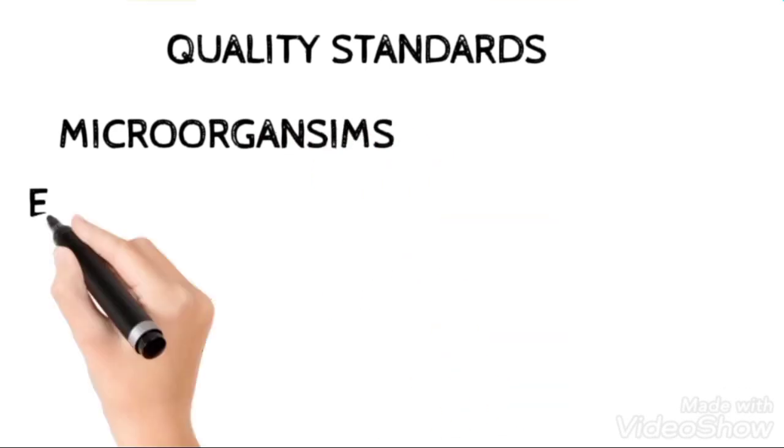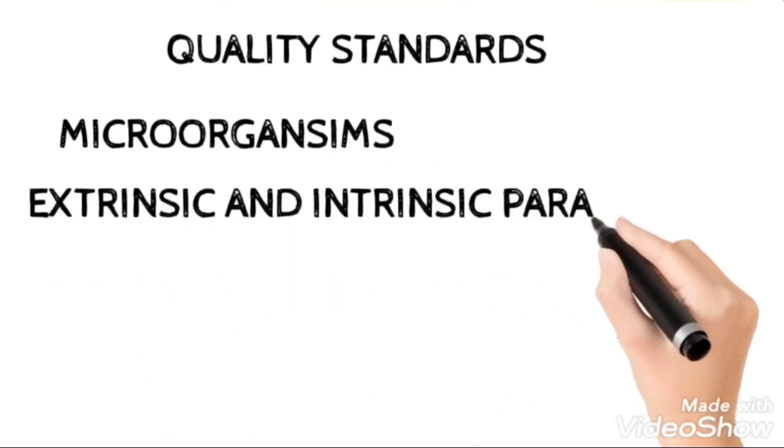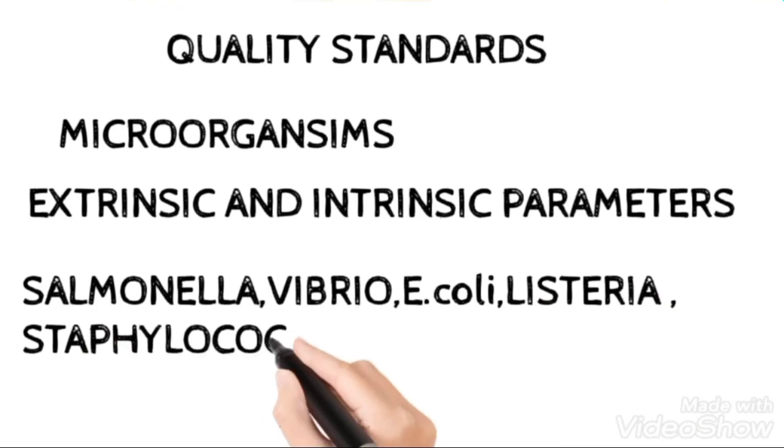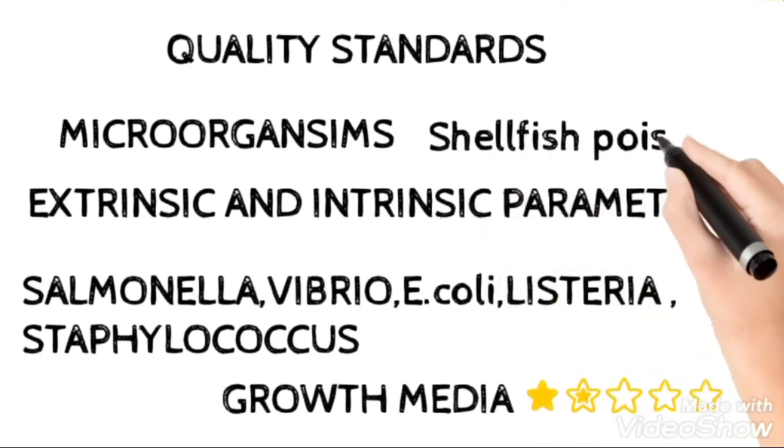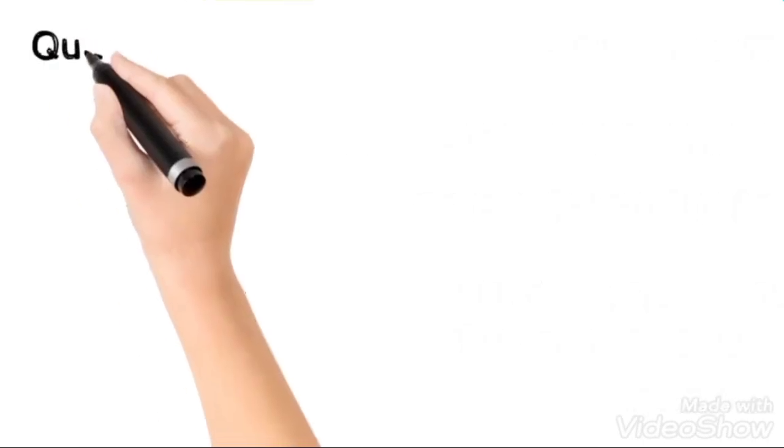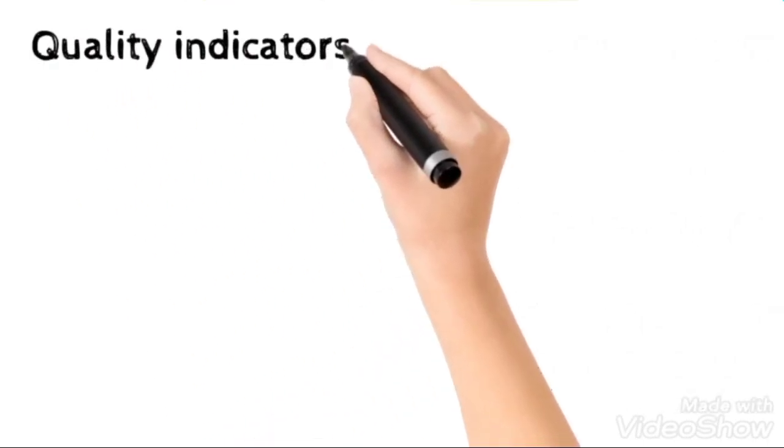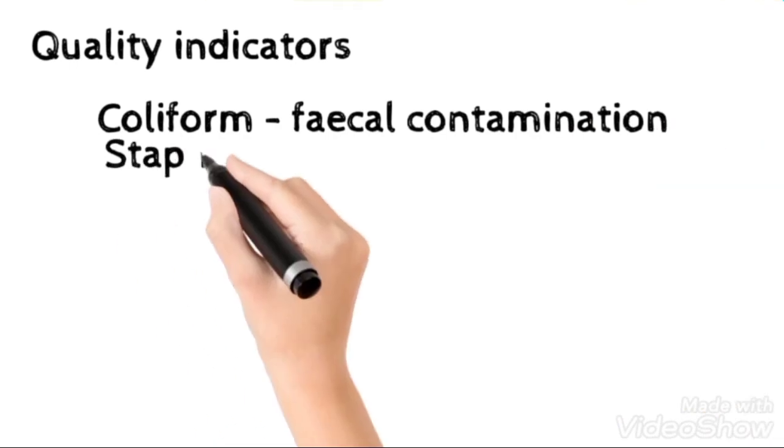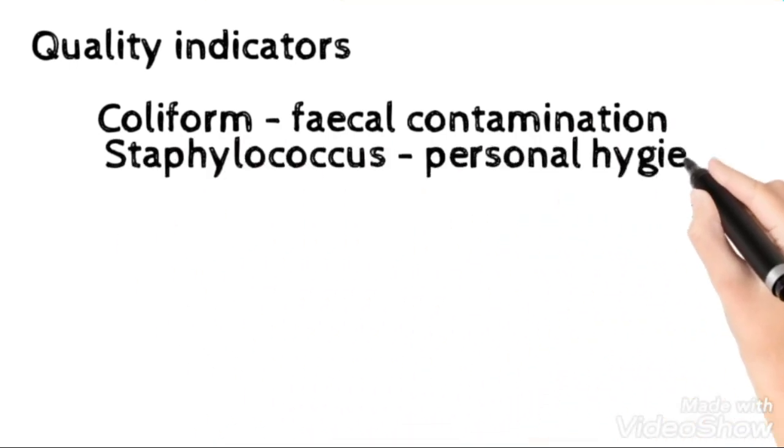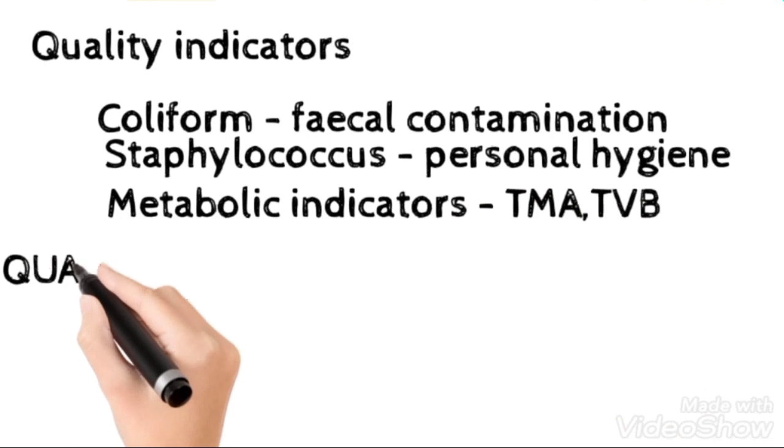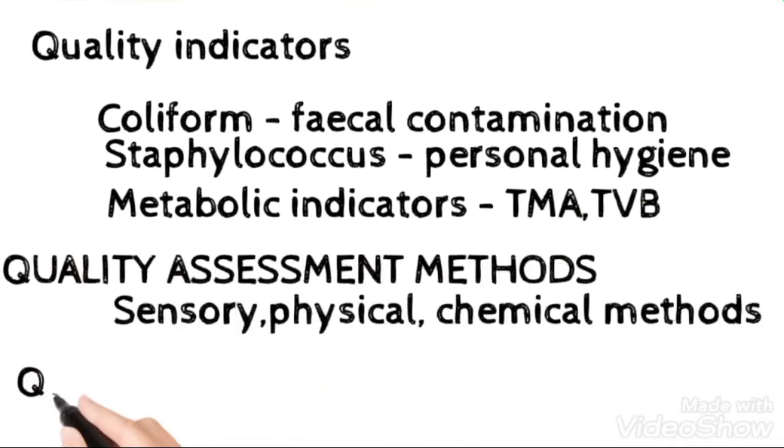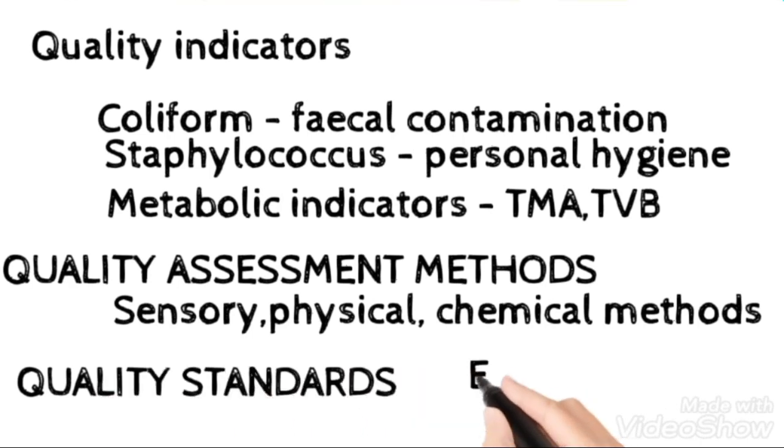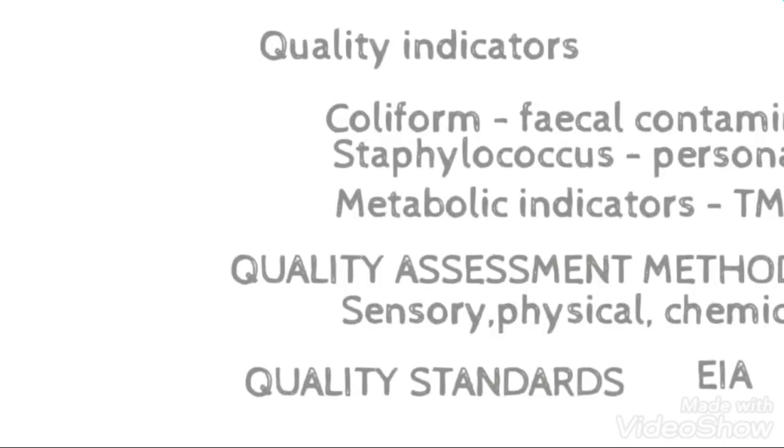For Quality Standards, you need to be very much clear with microorganisms and their growth factors like extrinsic and intrinsic, in which all these microorganisms very much thorough with the growth media. Shellfish poisoning will be a direct question in the FEO exam. Coming to the quality indicators, for example, coliform is the fecal contamination indicator, and Staphylococcus is the indicator of personal hygiene. TMA, TVB are the metabolic indicators of quality. And also sensory, physical, chemical methods of quality should be seen from the one-word point of view. Export inspection agency is also an important term in the quality.